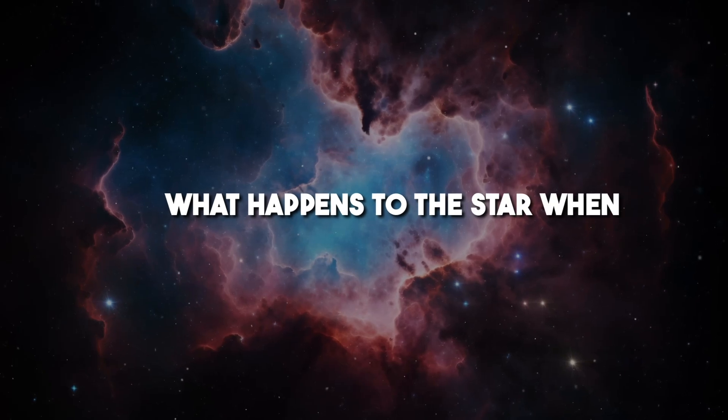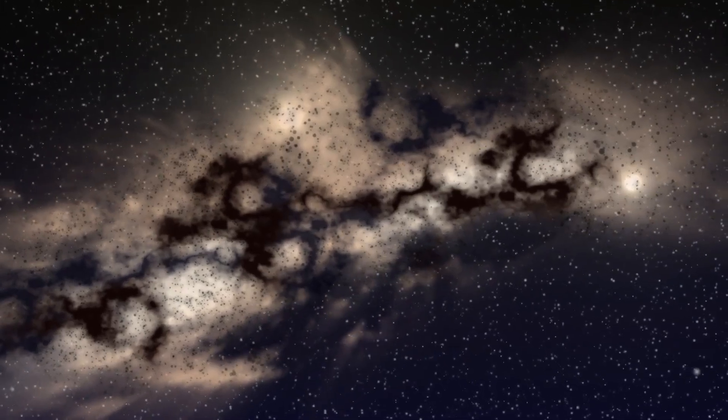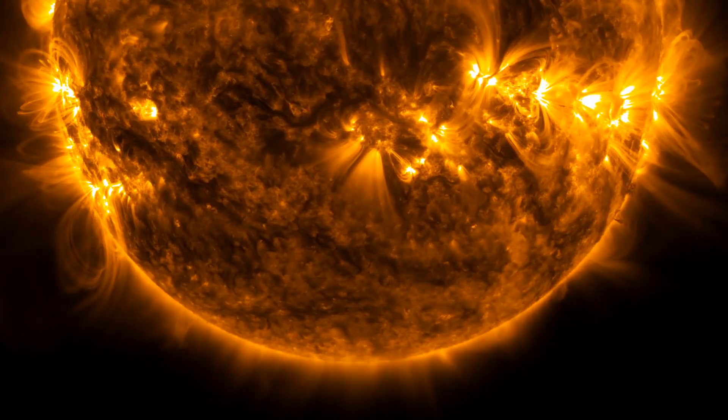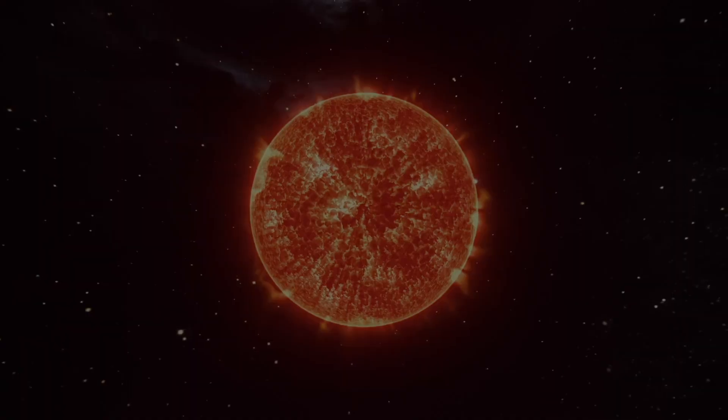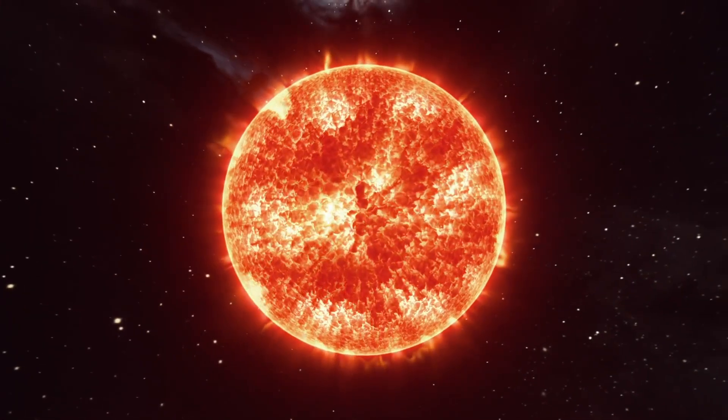What happens to the star when it runs out of hydrogen fuel? If a star's hydrogen fuel depletes, it reaches its final stage, termed the red giant stage. Betelgeuse is a red supergiant star, meaning it is reaching its final stage of life.